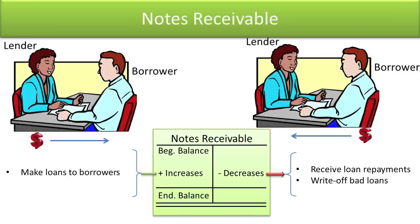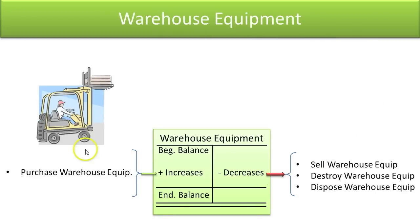Notes receivable: this is when you lend money. If you are the lender and you lend money to a borrower, you have an asset called a note receivable because they promise to pay you in the future. It decreases if they pay the loan off or if you realize the borrower will never pay and you write it off. Warehouse equipment — things that help you run your warehouse like a forklift — increases when you buy it and decreases when you sell, destroy, or dispose of it.